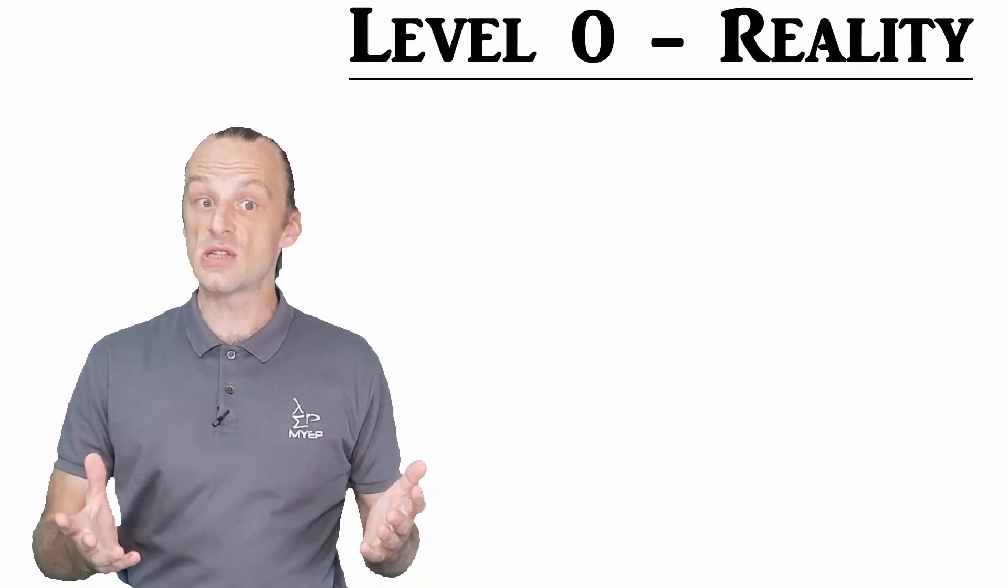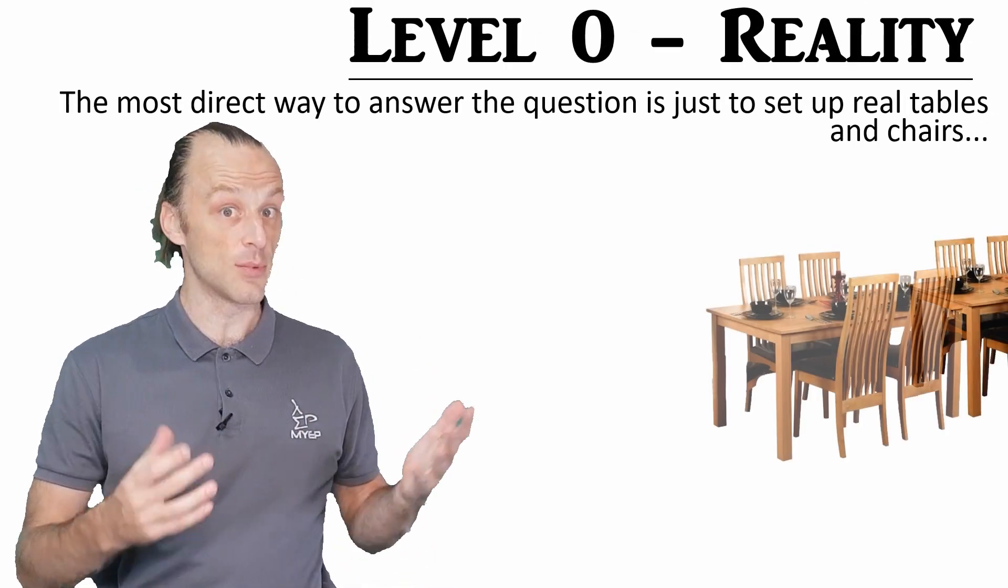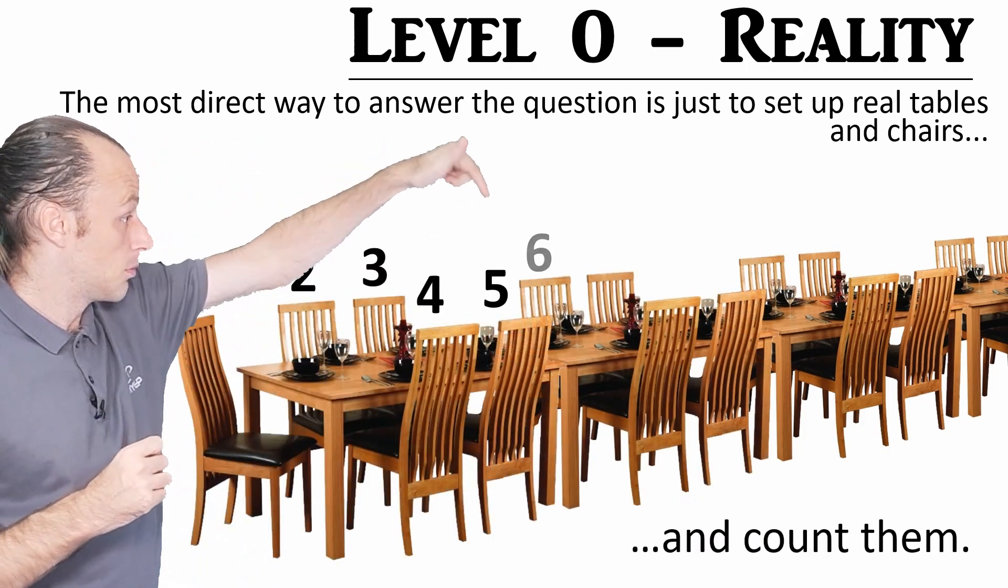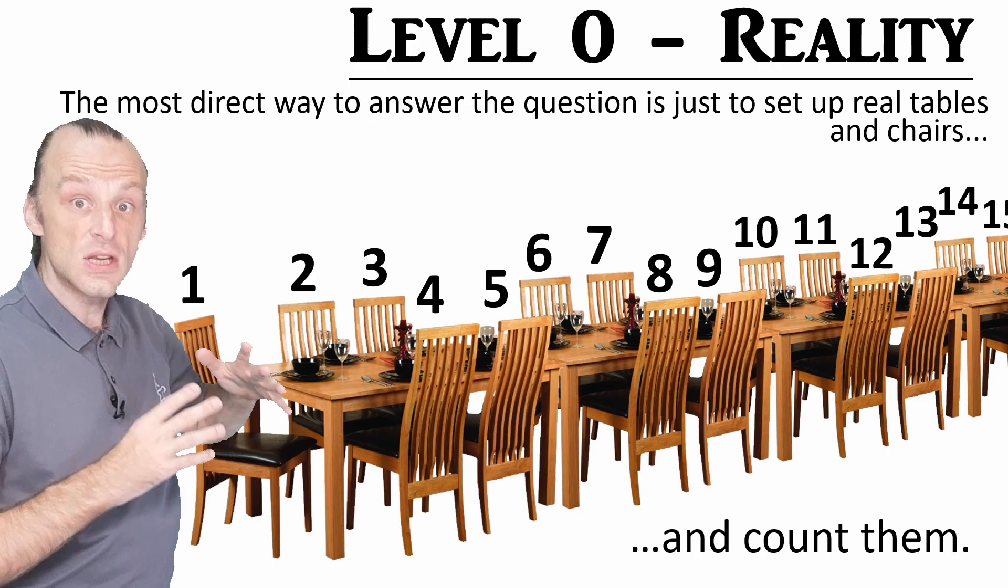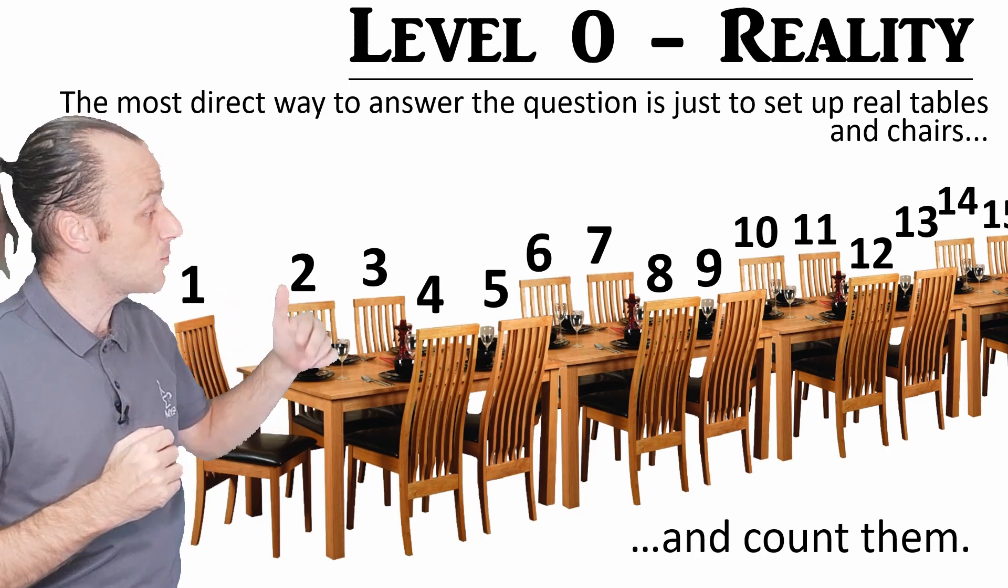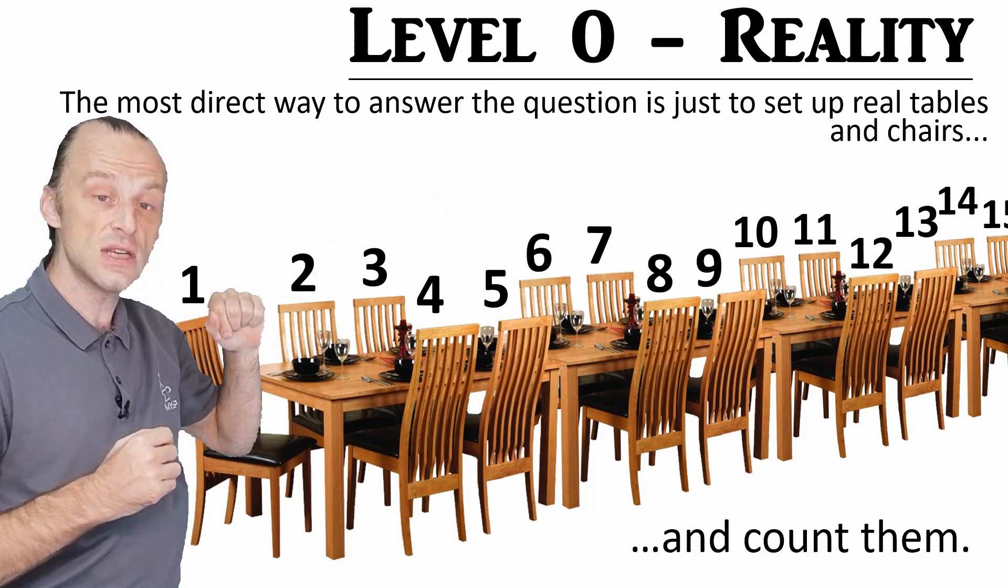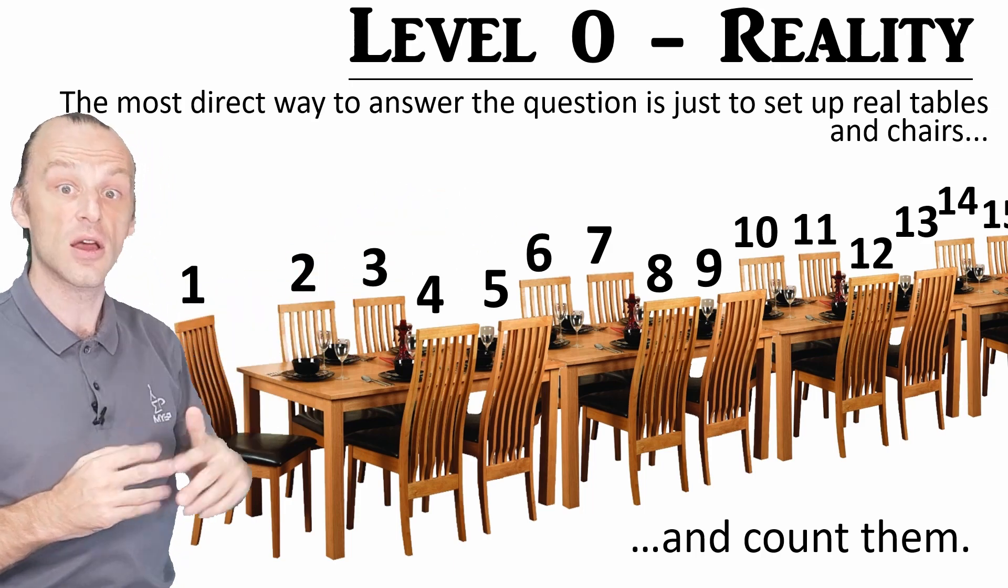The most direct way to answer this question is just to set up real six-person tables and then count the chairs. If you do this, you'll probably notice that when you put two tables end to end, you actually lose two seating places where the two ends are compared to a single table alone.